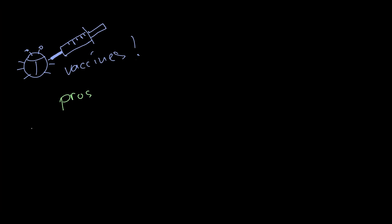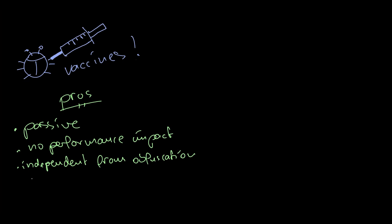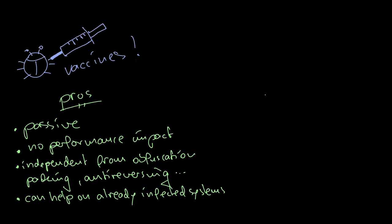To sum this up, what are the pros and cons of malware vaccines? One major advantage is that vaccines work passively. They have no performance impact in contrast to, let's say, signature scanning. They work independently from any kind of obfuscation, packing, or anti-reversing techniques. Some vaccines can help on already infected systems and networks. This is especially useful if you want to contain an outbreak of a worm infection in a network and cannot turn off all machines connected to it.